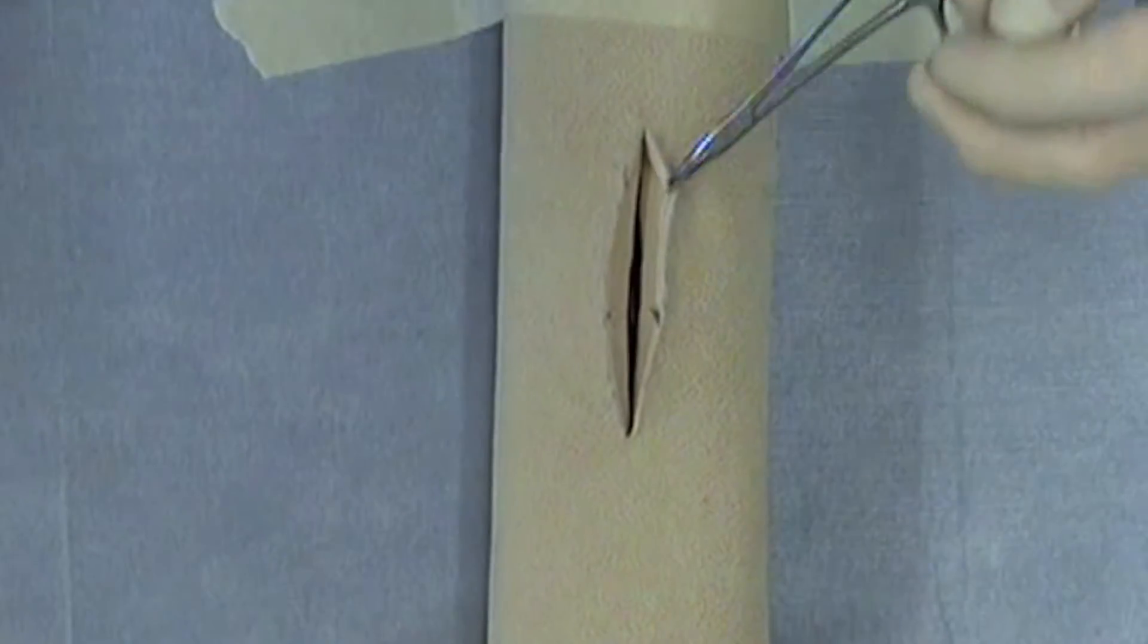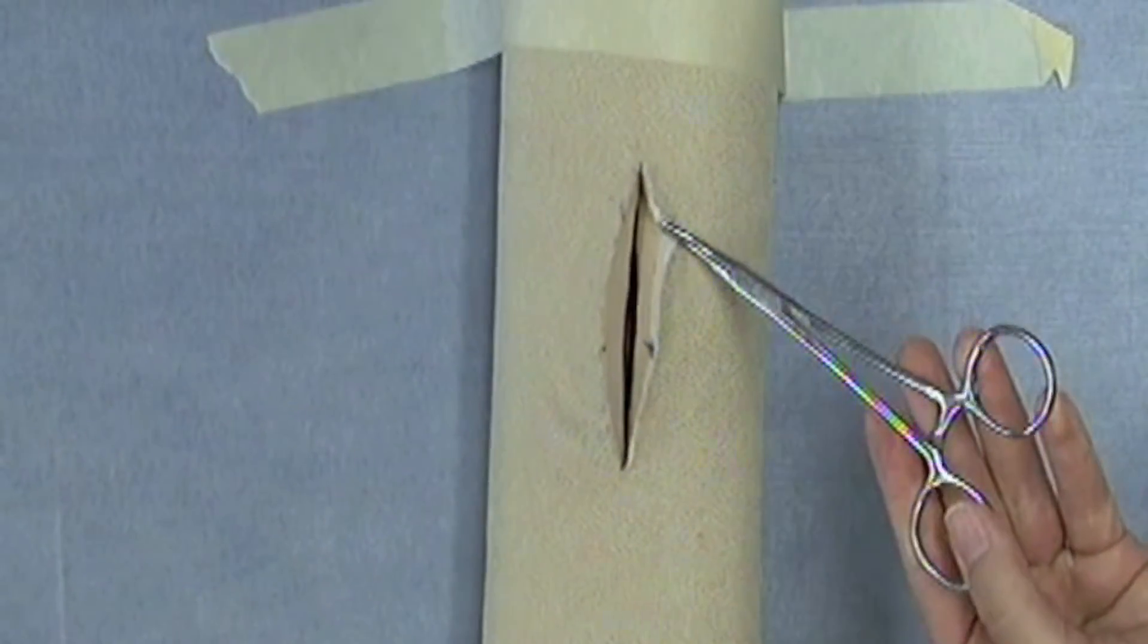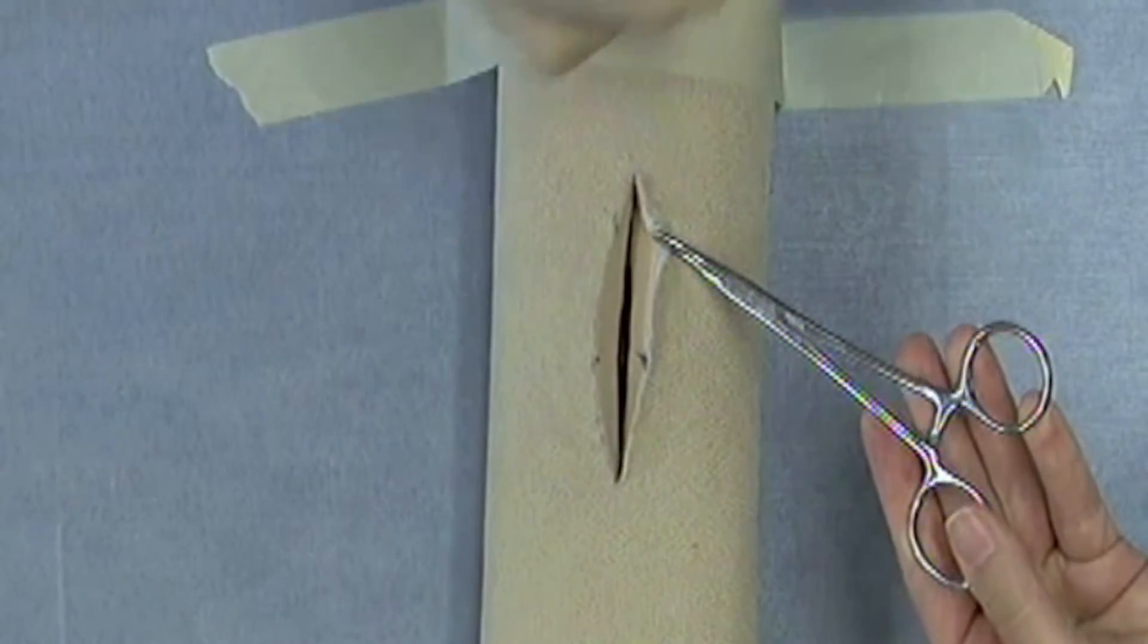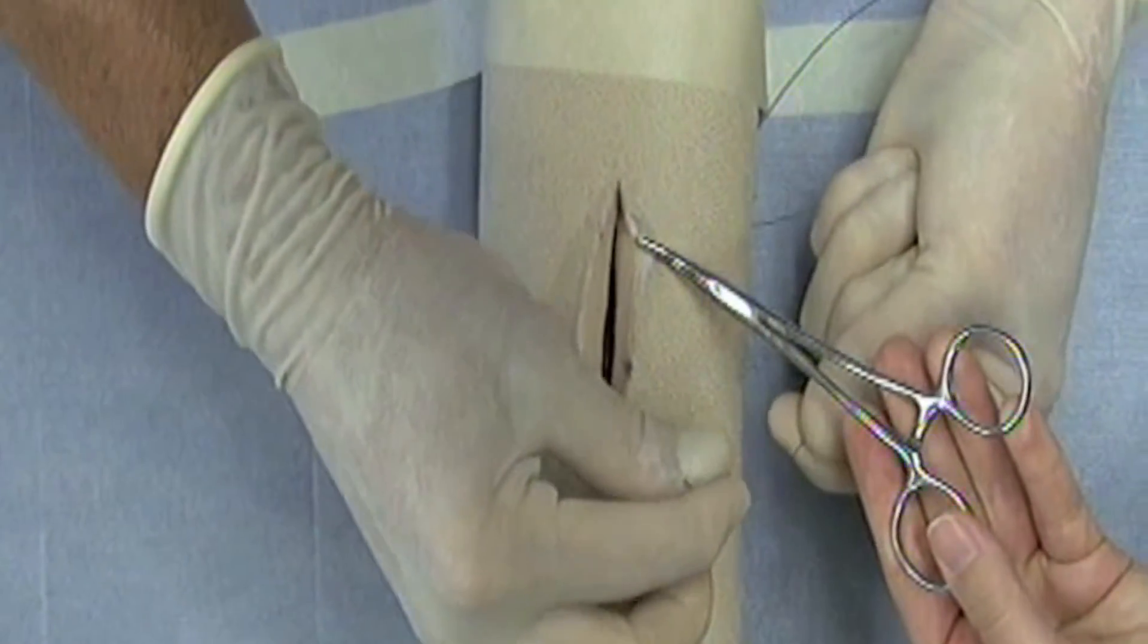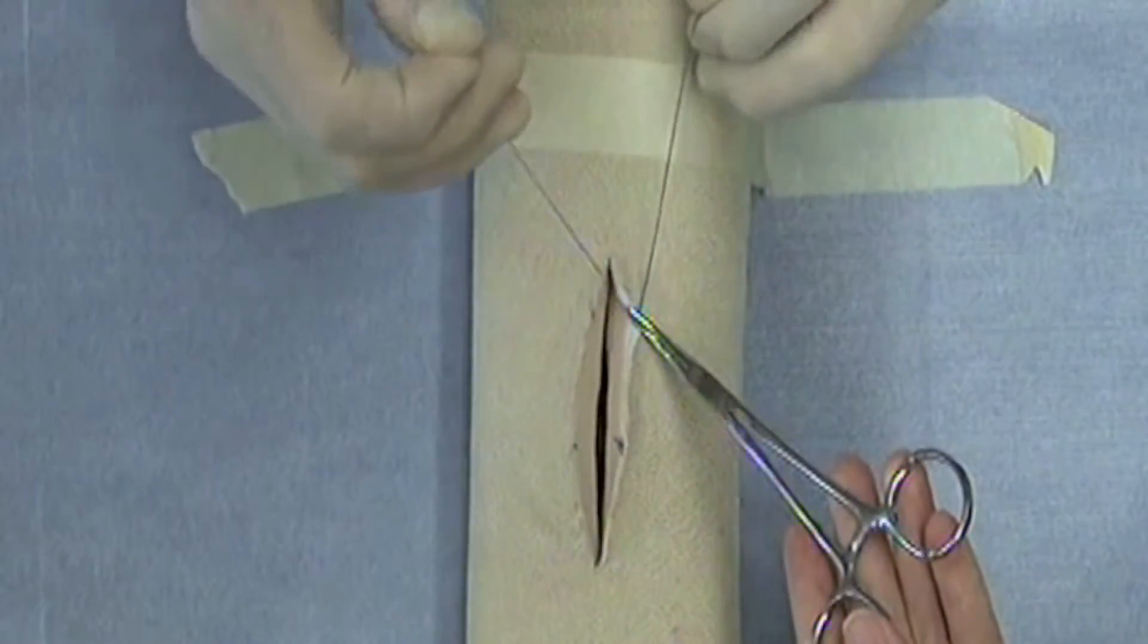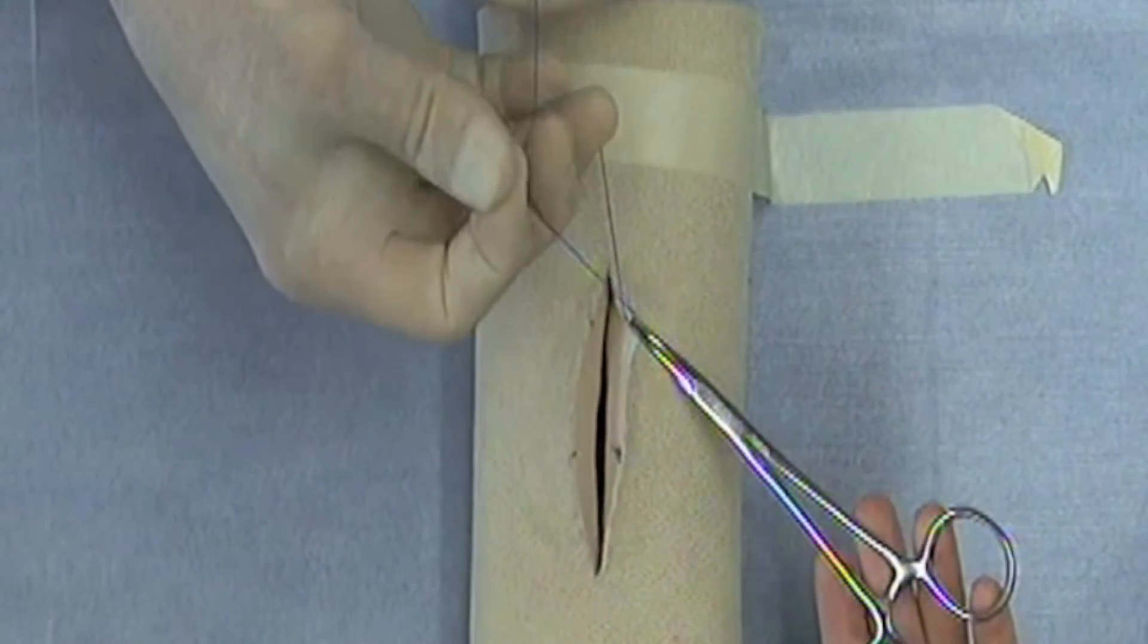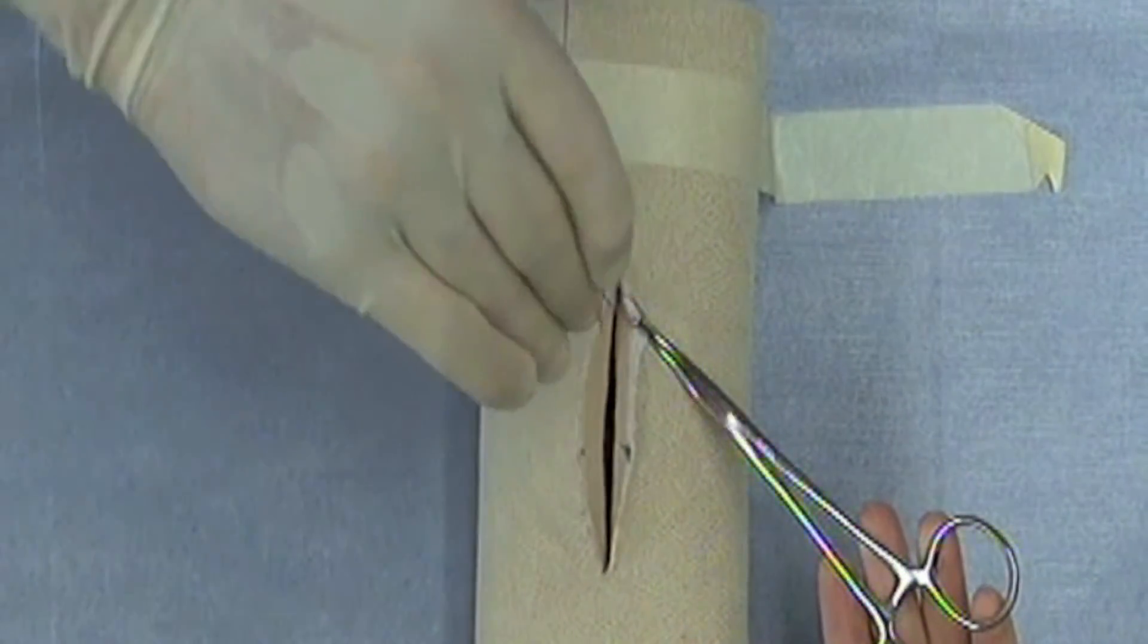For this hemostatic forceps and vessel, I will demonstrate a right-hand one-hand tie. Notice the difference right away is that I'm using the short end of the suture material now in my right hand. The tips of the instrument are up, meaning that I can clearly see the tips being the surgeon. I'm going to complete a one-handed tie.